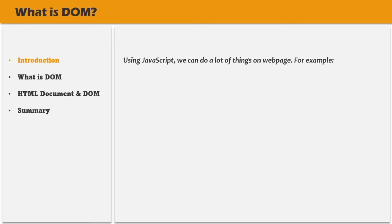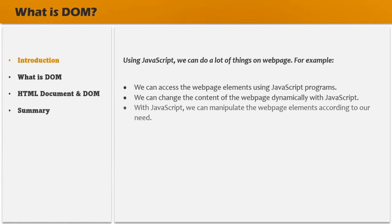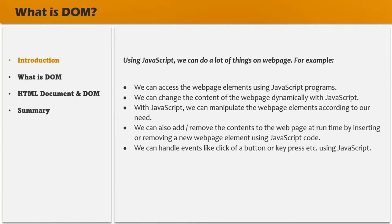In the very first lecture of this course, we learned that we can do a lot of things using JavaScript on the web page. For example, we can access the web page element using JavaScript programs. We can change the content of the web page dynamically with JavaScript. We can manipulate the web page elements according to our need. We can also add or remove the contents of the web page at runtime by inserting or removing a new web page element using JavaScript code. And we can handle events like click of the button or key press, etc. using JavaScript.